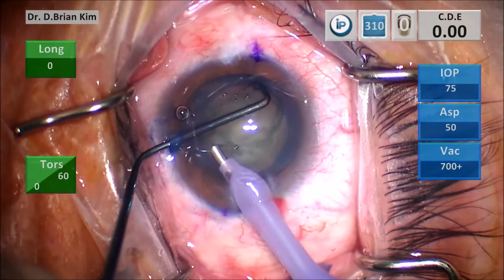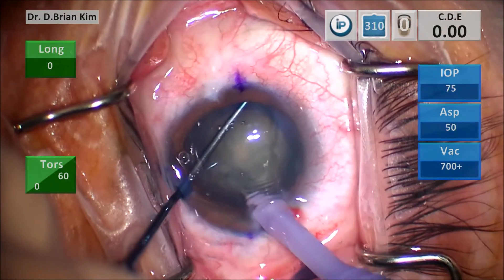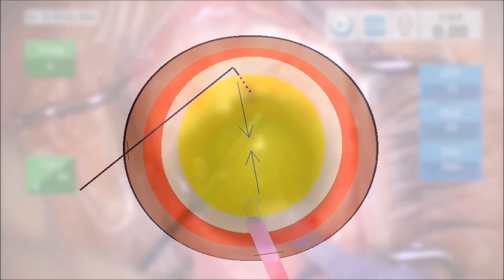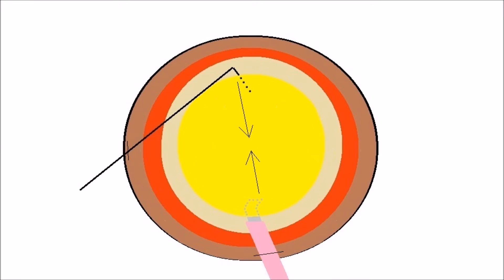And so you'll see after I move the epinuclear material on the surface of the lens, place a chopper out to the equator. The phaco tip is going on the surface of the lens, and I'm burying it into that lens material. As I bring both instruments to the center, I will then fracture the lens.